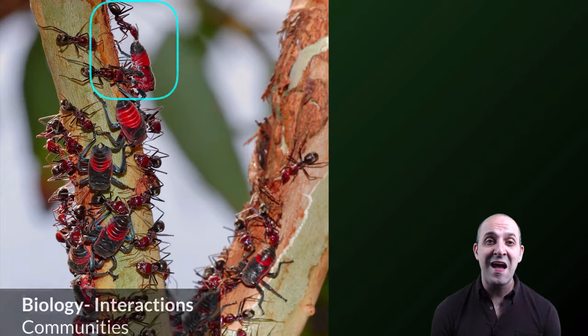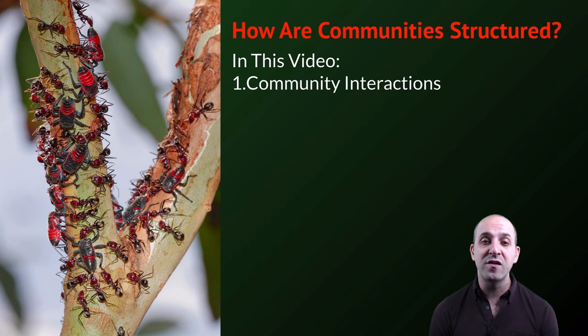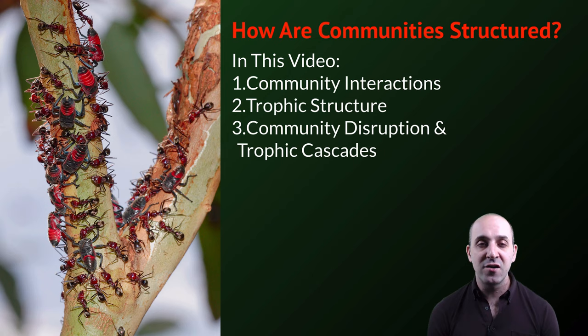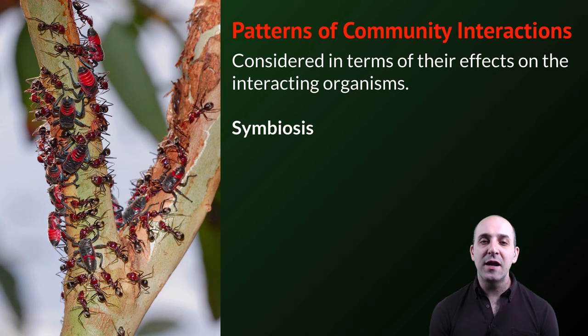We're going to talk about how communities are structured. We'll discuss community interactions and how they contribute to community structure, trophic structure or the feeding relationships in a community and the effects of those relationships, and finally, we'll talk about community disruptions and trophic cascades. To begin with, let's take a look at patterns of community interactions in terms of their effects on the interacting organisms, what we would call symbioses.